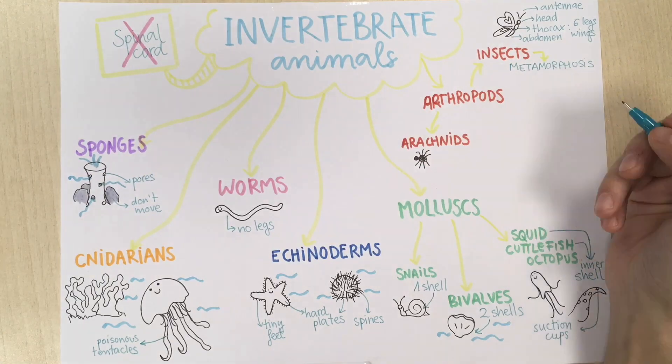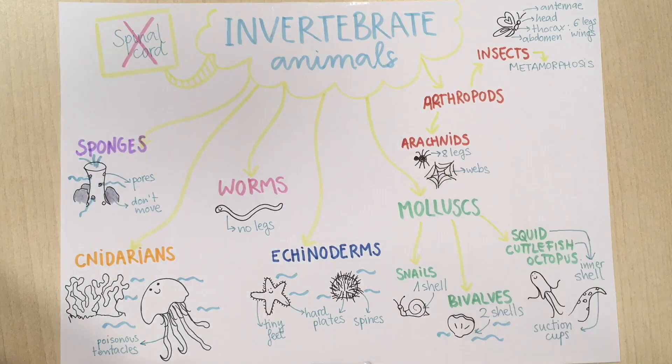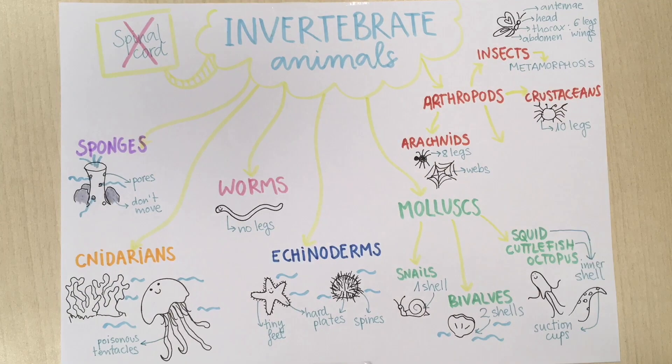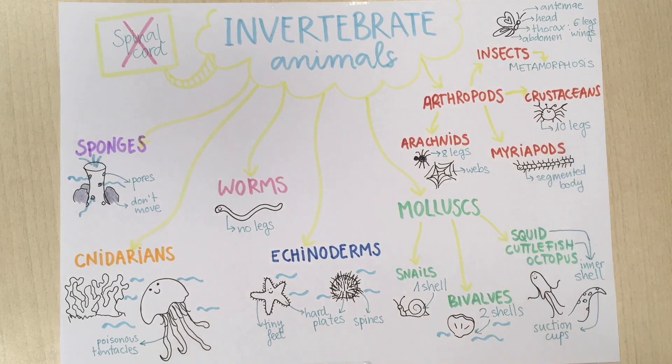Arachnids have two legs and they don't have antennae. They produce silk to make waves. Most crustaceans have ten legs and two antennae. Finally, myriapods have a segmented body. In each segment they have a pair of legs so they have lots of feet.